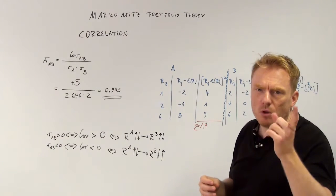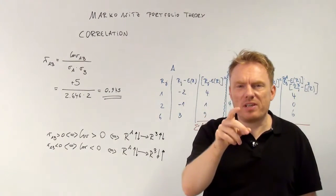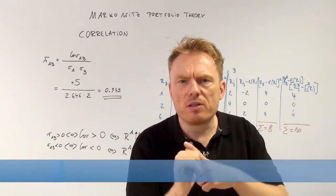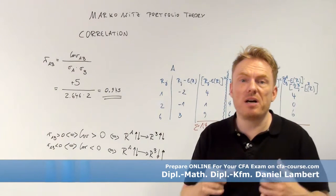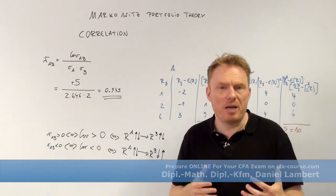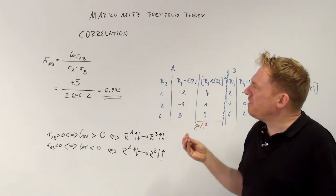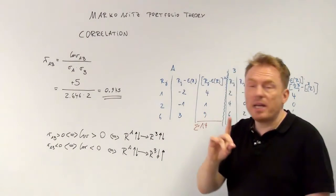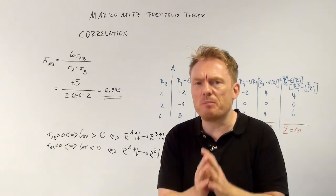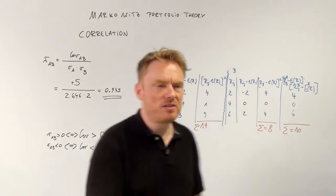We already calculated the covariance, which was plus 5. As I already said, once the covariance is computed you only need to look at the sign — whether it's positive or negative — since there is no upper bound and no lower bound for covariance. So we need to compute a different thing, which is correlation. For the correlation coefficient there is an upper bound and a lower bound, which is plus 1 and minus 1. That's important.